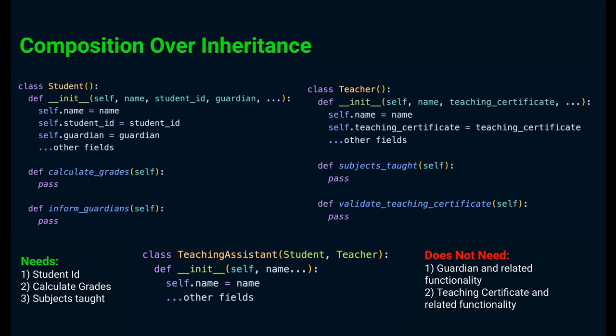Composition over inheritance is one of the good practices which you use in low level design or in designing your classes. This principle is quite useful in your software design interviews. Let's try to understand what this is with an example.